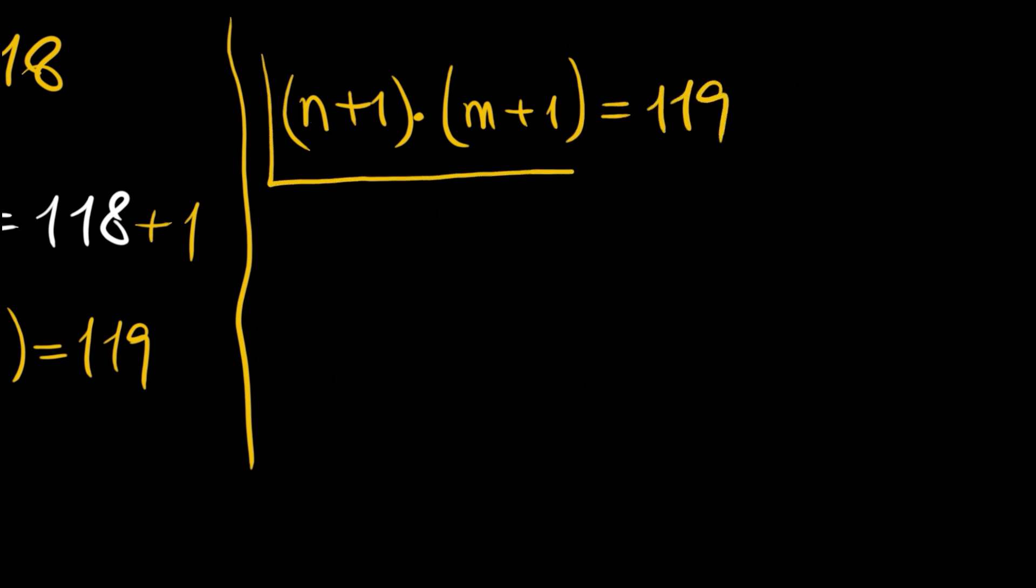Now this is better since we should think about the positive integer divisors of 119. If you consider this is 7 times 17, this gives 119.